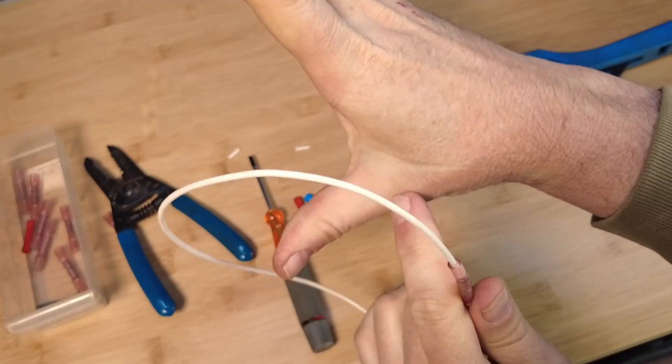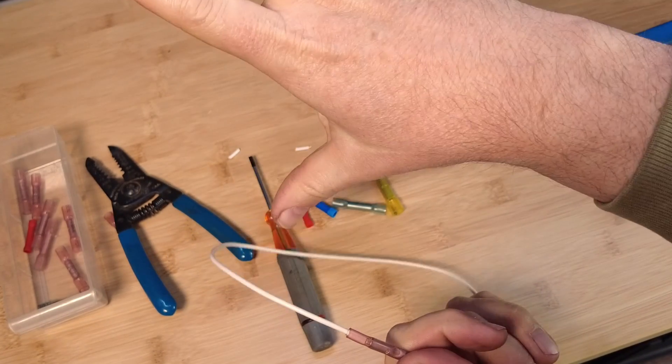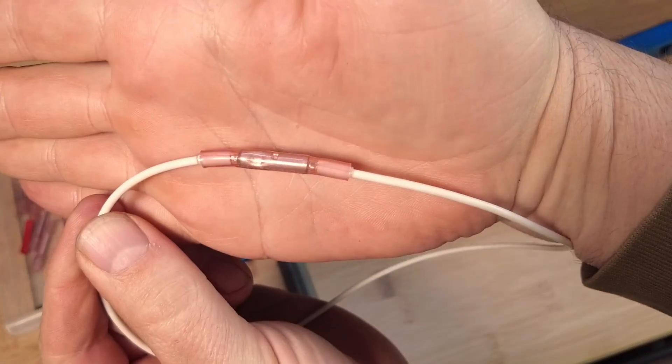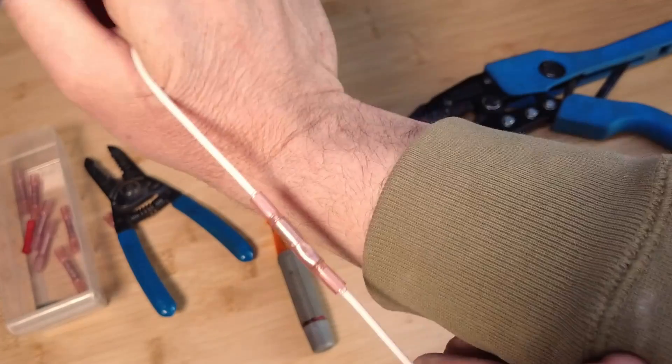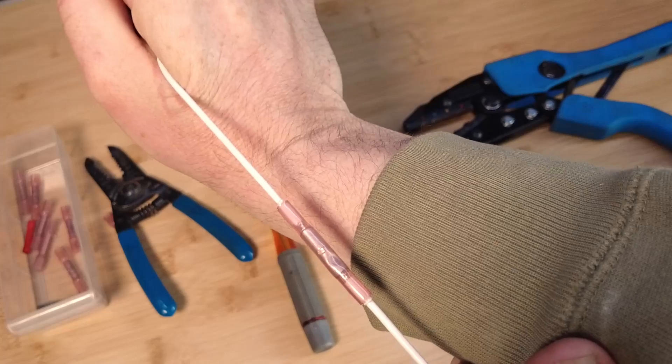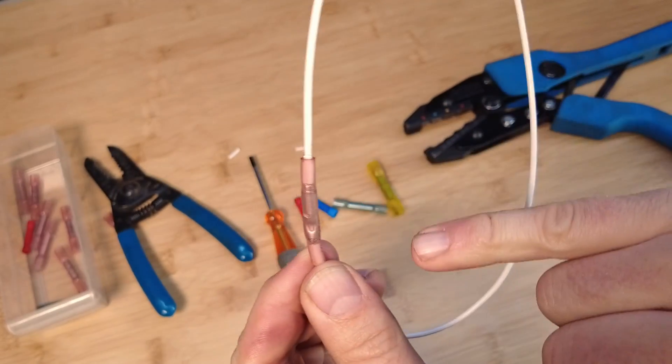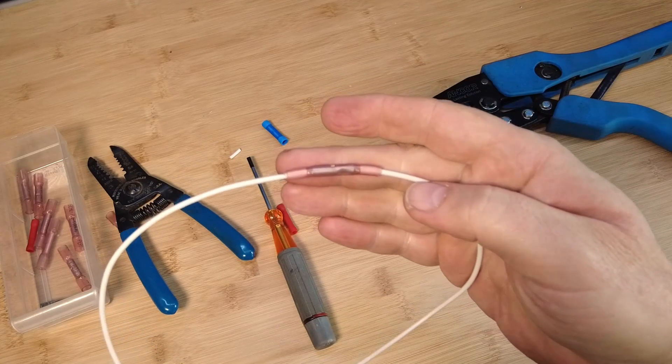So you can see by my hand here, I was exerting some fairly significant force on that wire. You can, hopefully it'll focus here. You can see that it didn't move. I'm probably putting 20 pounds of force on that wire and I can't get it out. And that's not the crimp. That's just strictly the adhesive.